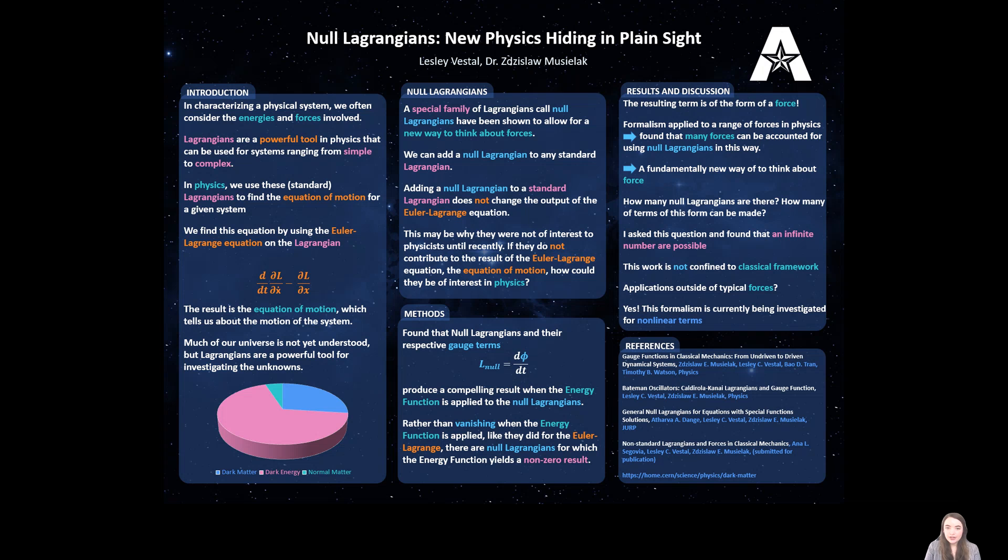So when we're looking at a physical system, we first look at either forces or energy to try to characterize the system. Lagrangians are a powerful tool we use in physics to do this.